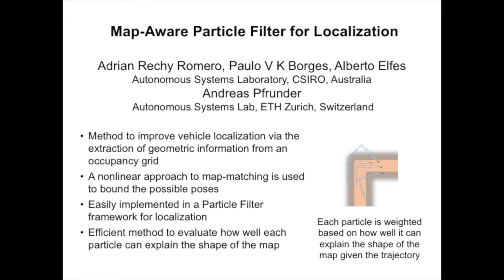This work proposes a method for using map information to improve the localization estimate of a particle filter. More specifically, we are working with autonomous ground vehicles and we are using an occupancy grid as our spatial map representation.